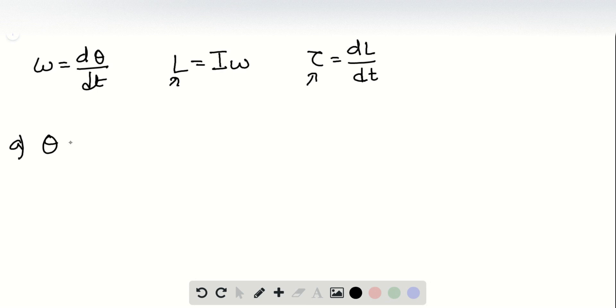So the expression that we have here is theta equals A t squared plus B t to the power 4, right? Now here we see that the unit for theta must be radians, right? Because the unit for theta is radians.